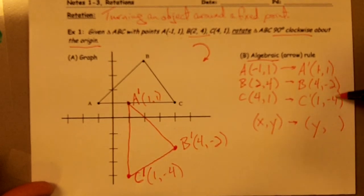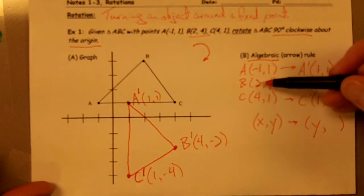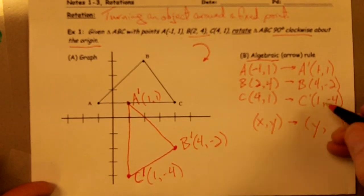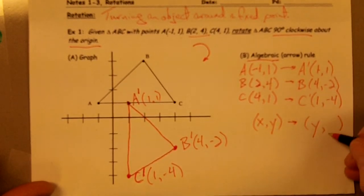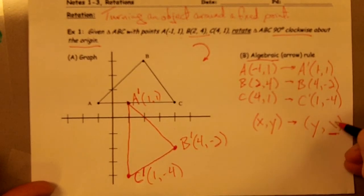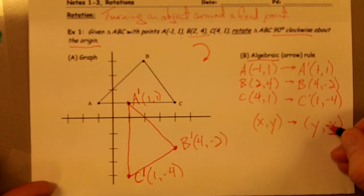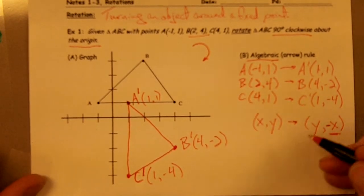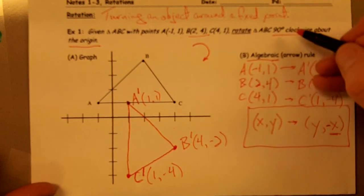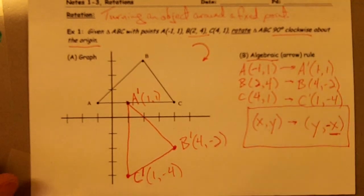And then my new y-coordinates, 1, negative 2, negative 4, I noticed that they are the same numbers as my original x-coordinates, except they've all been multiplied by negative 1. So it looks like my new y-coordinate is my original x-coordinate multiplied by negative 1. So here is my algebraic rule for rotating something 90 degrees clockwise around the origin.